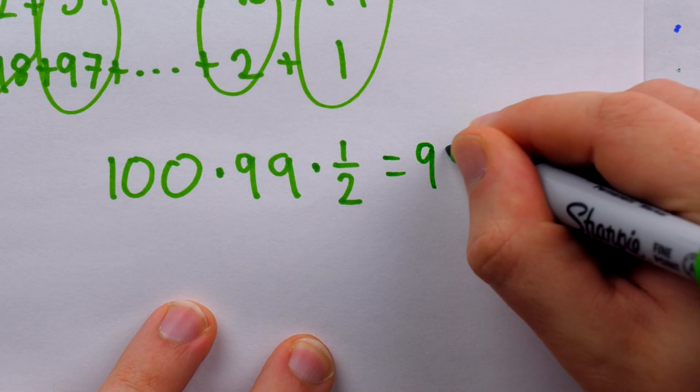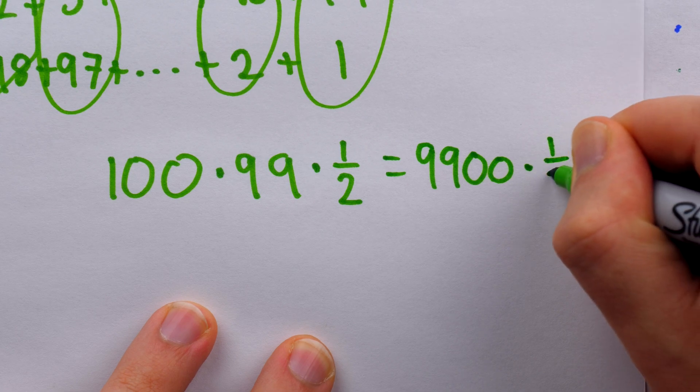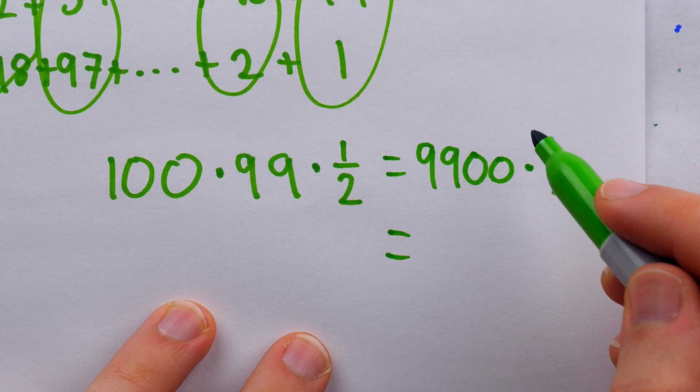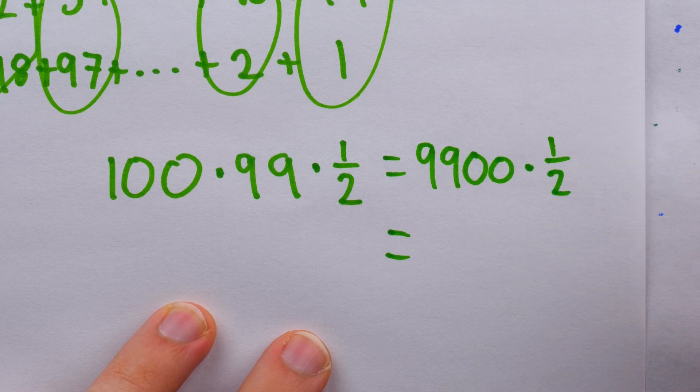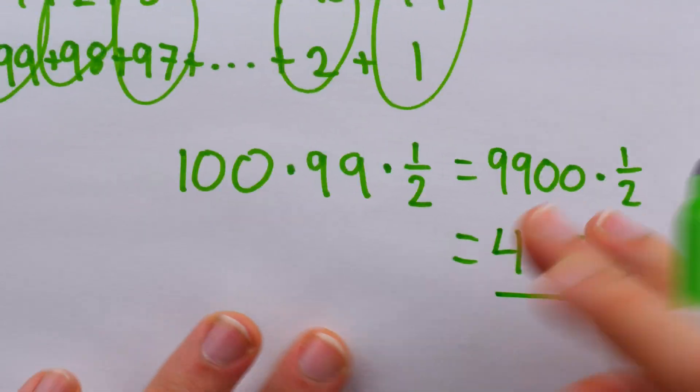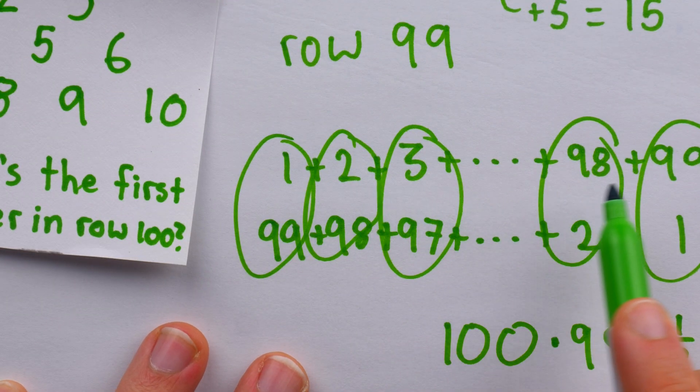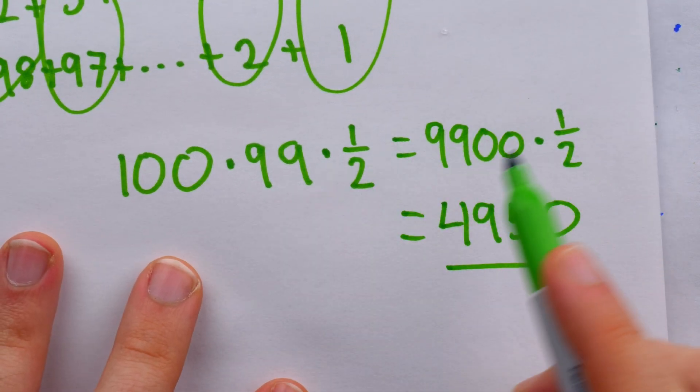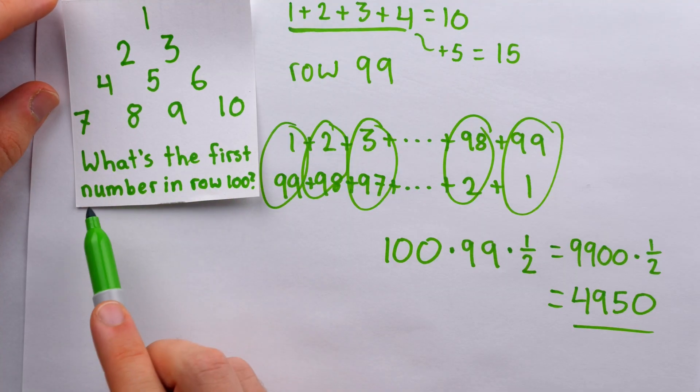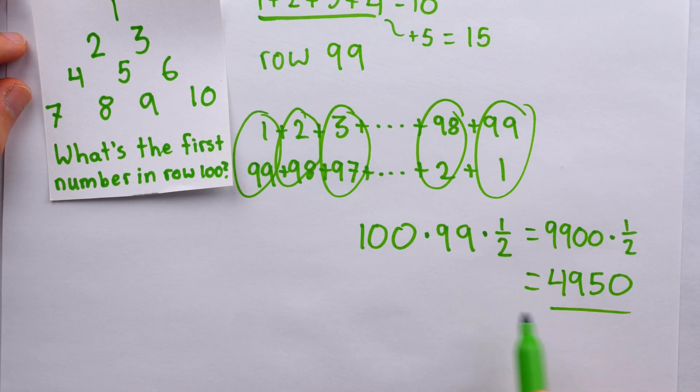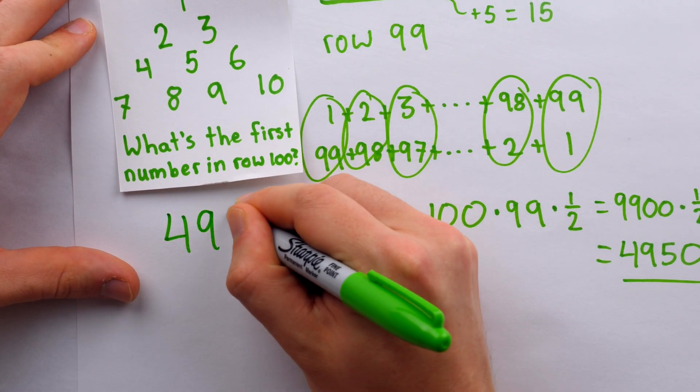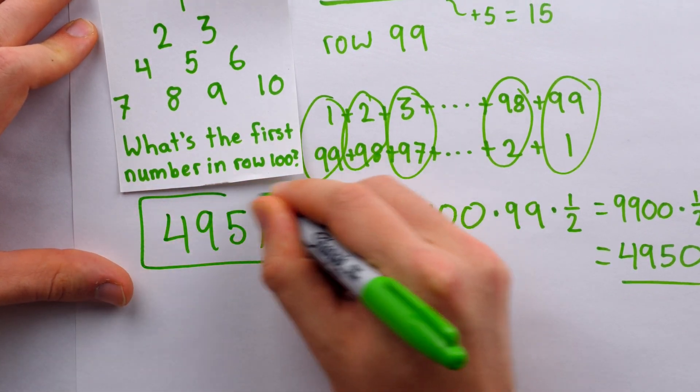And this is pretty straightforward arithmetic to do. 99 times 100 is 9,900. And then to multiply that by one half, well, half of 9,000 is 4,500, and half of 900 is 450. Add those things together, and we get 4,950. That's this sum, 1 plus 2 plus 3 all the way up through 99. And so this is the number at the end of row 99. So what's the first number in row 100? Well, it would be the number at the end of row 99 plus 1. So the answer is 4,951. Pretty cute little problem.